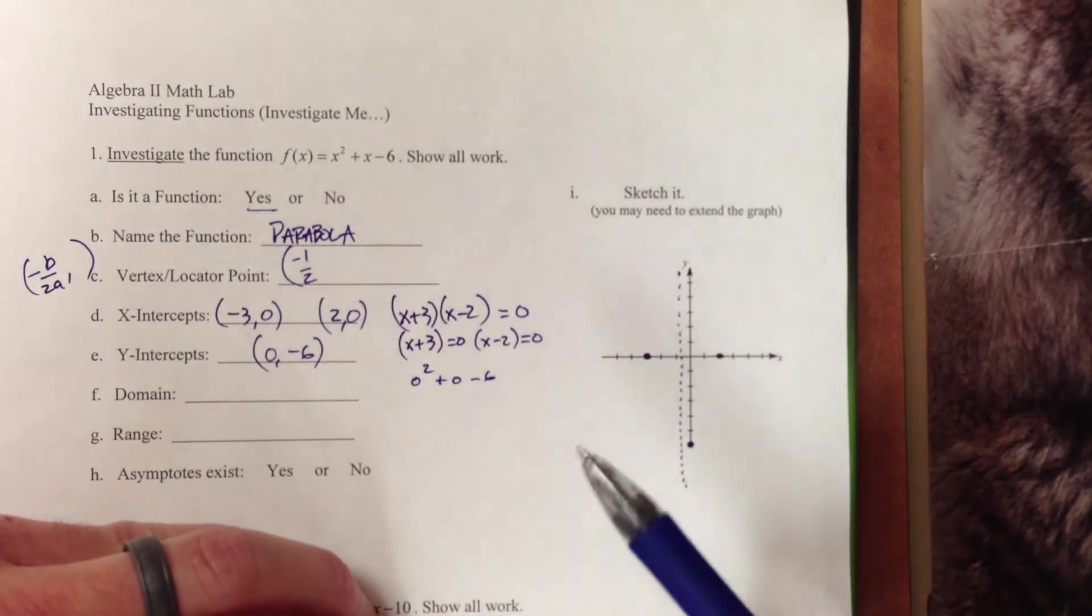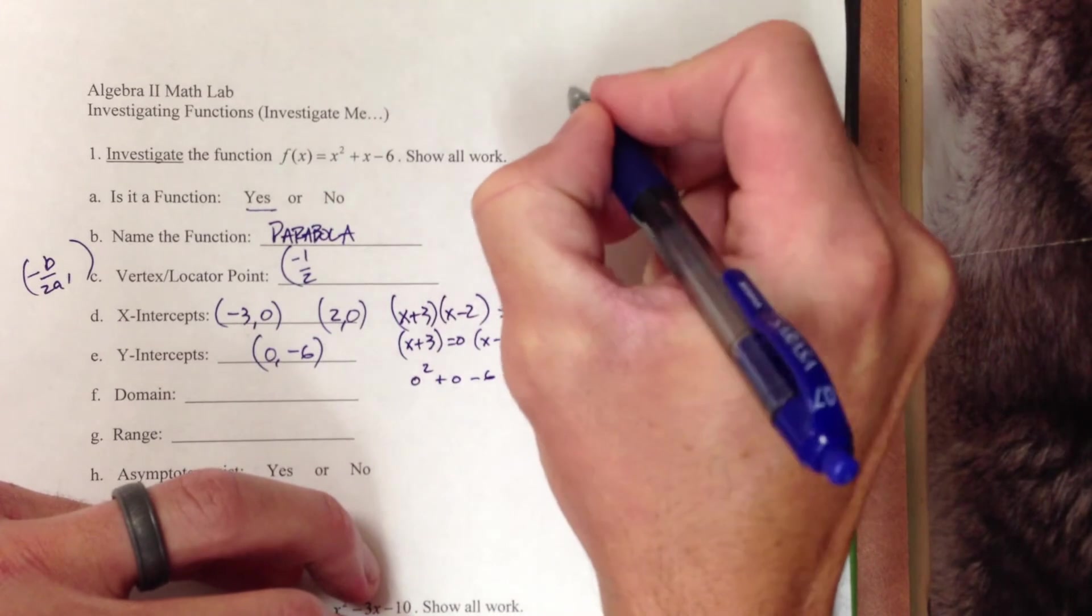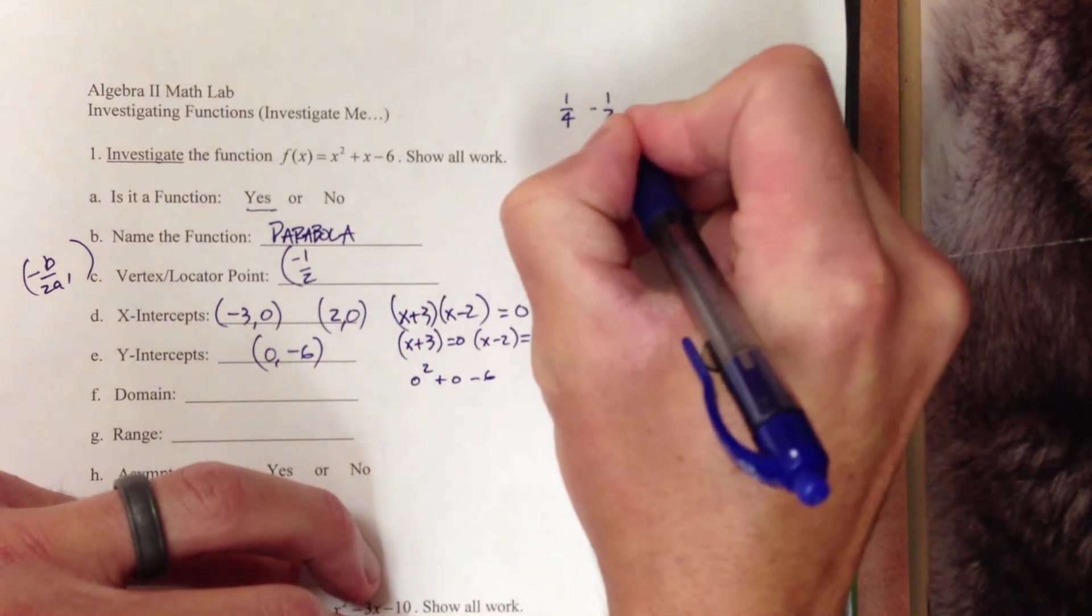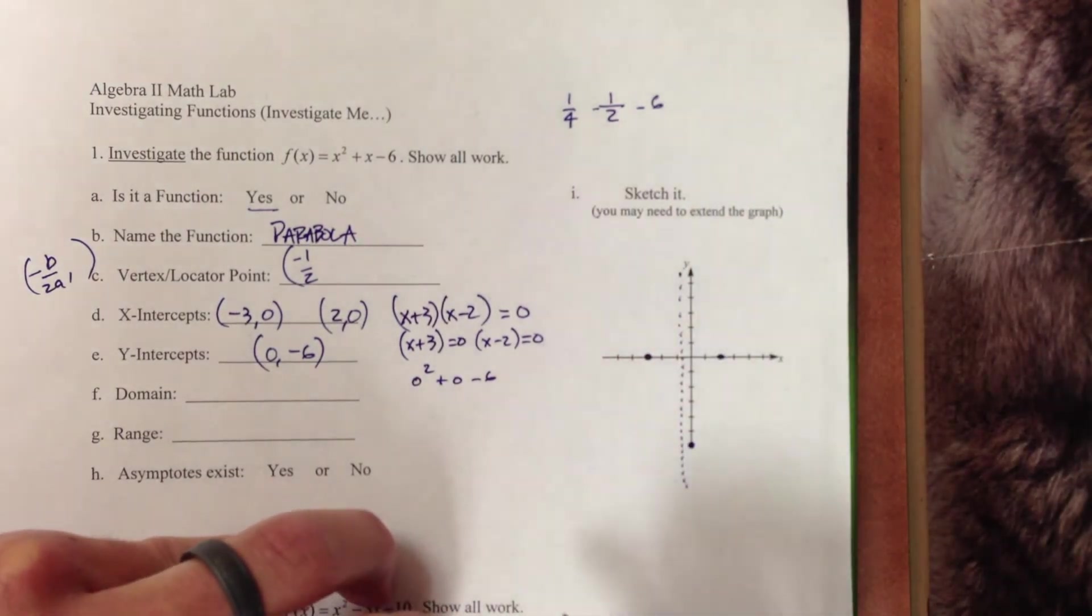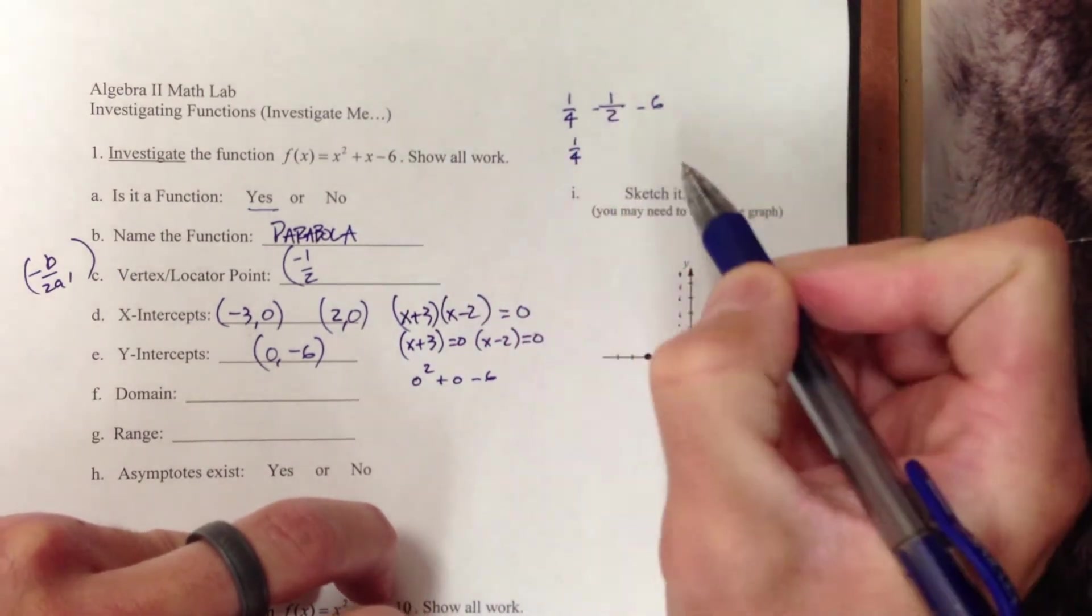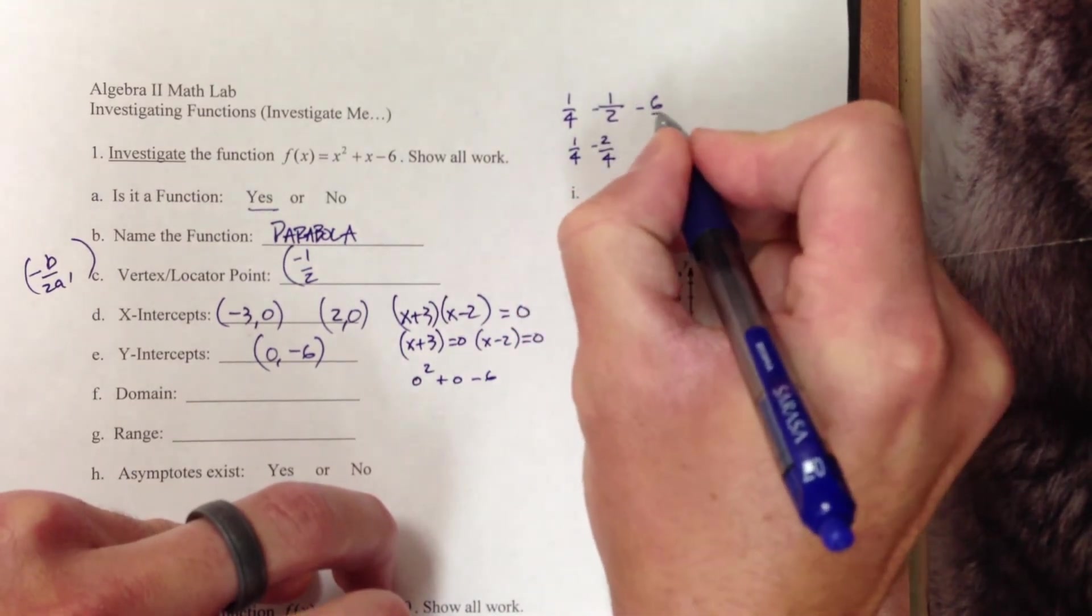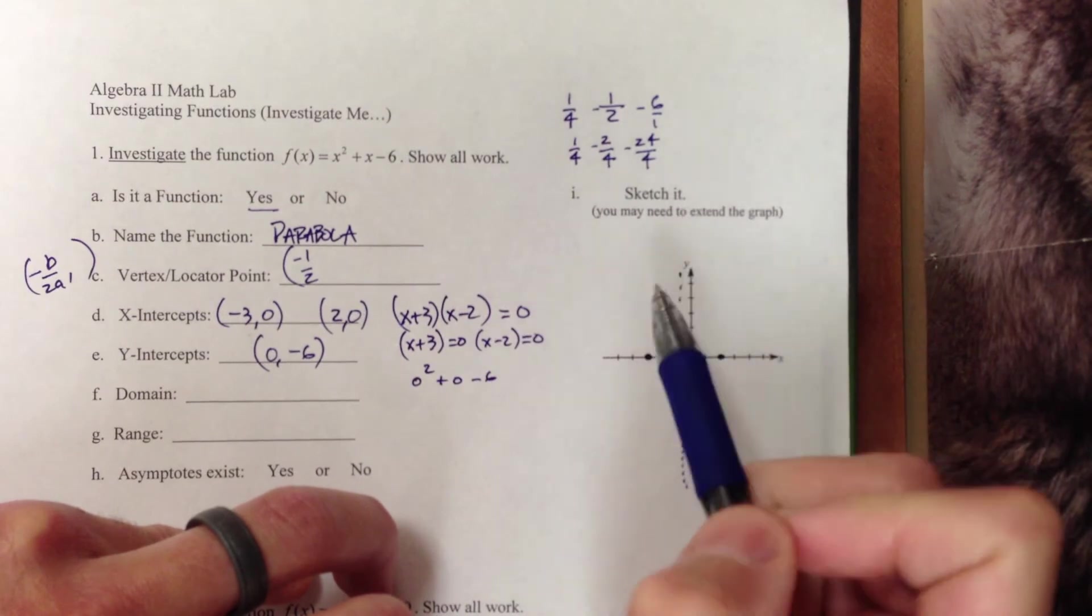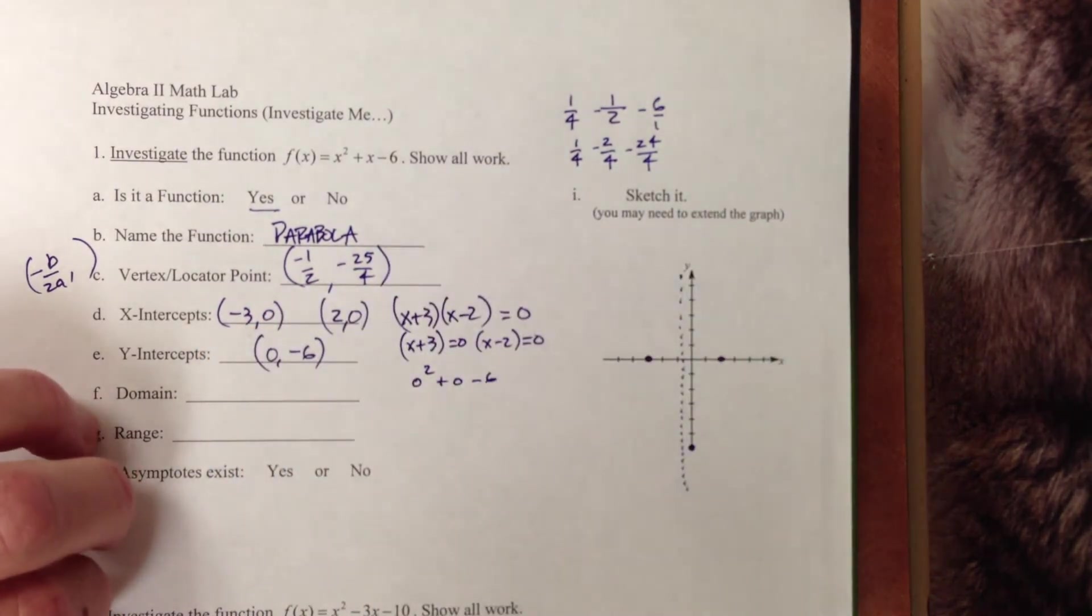So now I'm going to take my 1 half value and I'm going to substitute it back into my original function, x squared plus x minus 6. So negative 1 half squared would give me a positive 1 fourth. Negative 1 half in here for x would give me a negative 1 half. And I get minus 6. Now it's just a matter of finding a common denominator amongst all these. So I get a positive 1 fourth. If I multiply top and bottom by 2, I will end up with negative 2 fourths. I need to multiply top and bottom of this fraction by 4, so I will get negative 24 over 4. When I combine my numerators, I get negative 25 over 4.